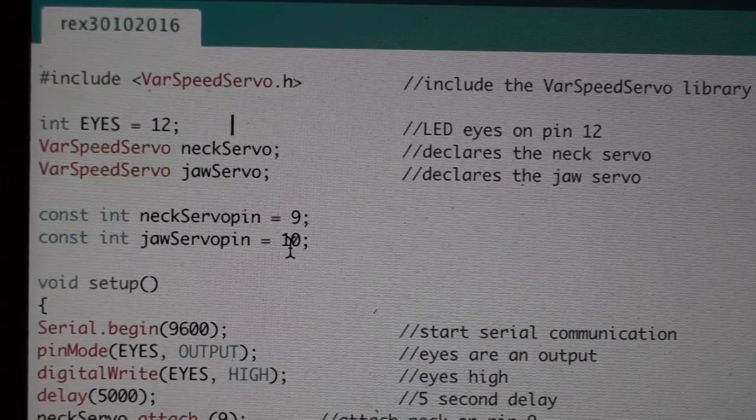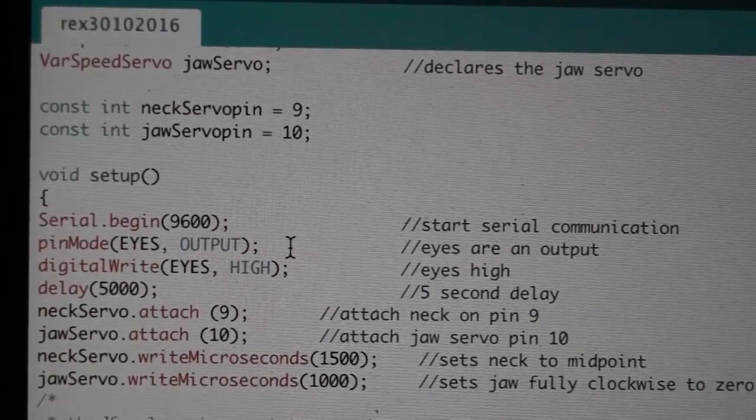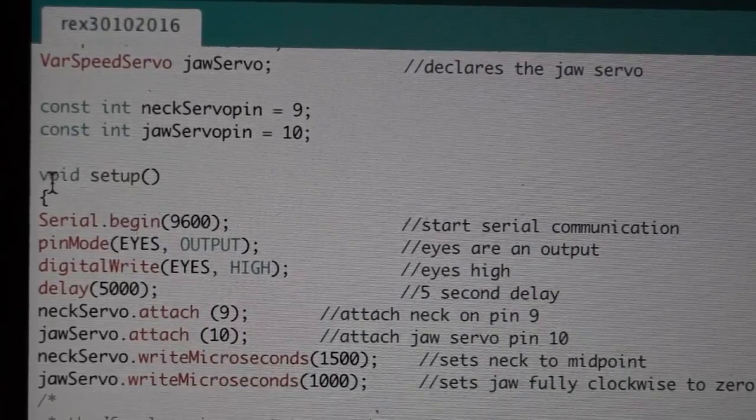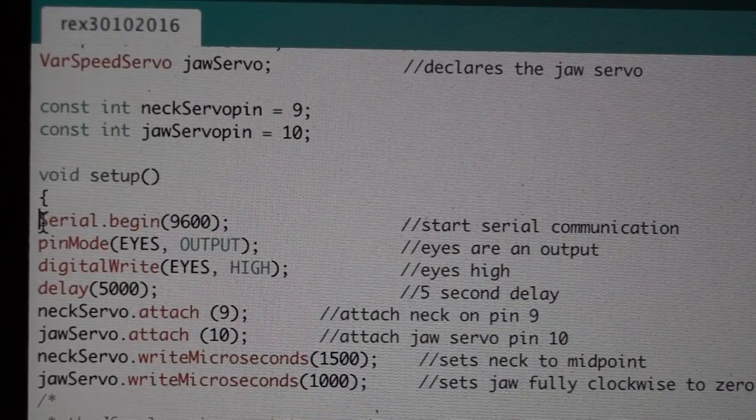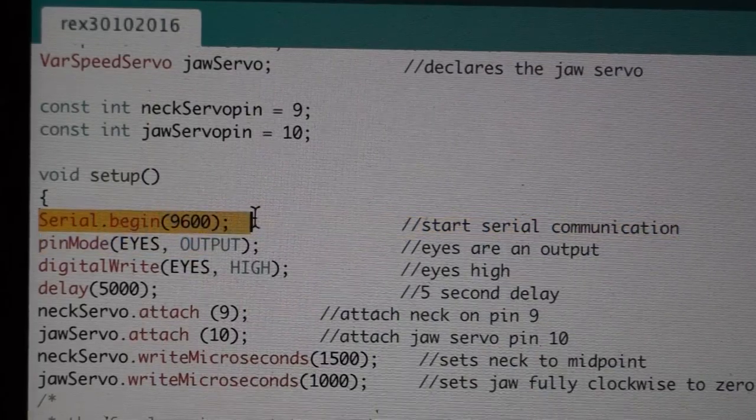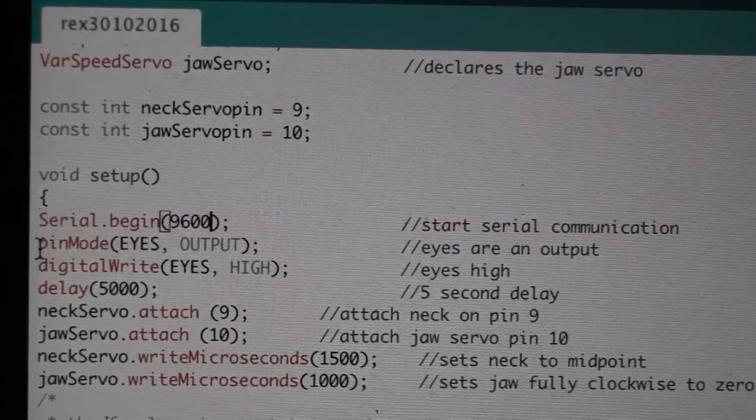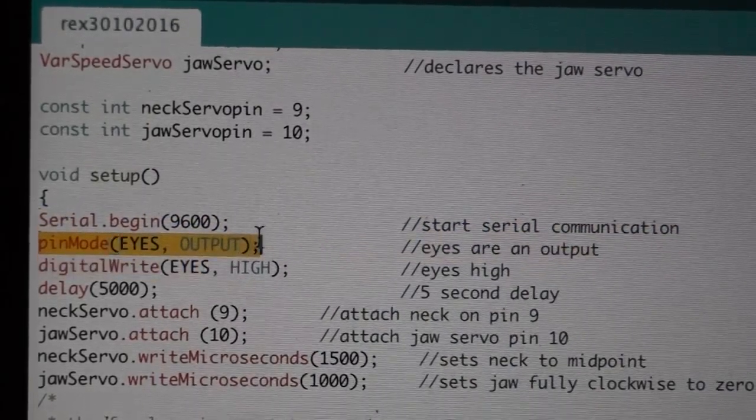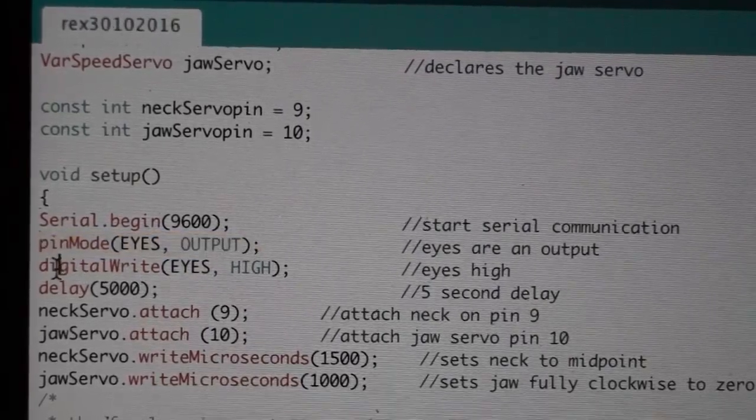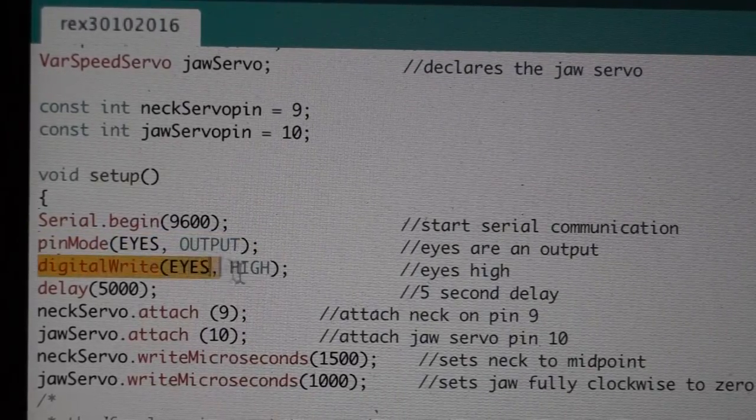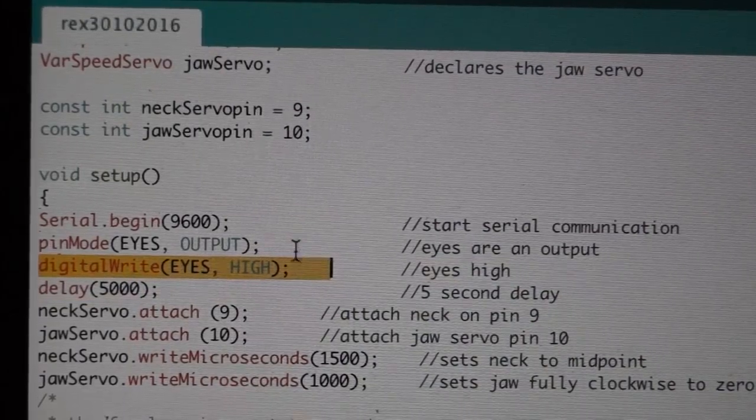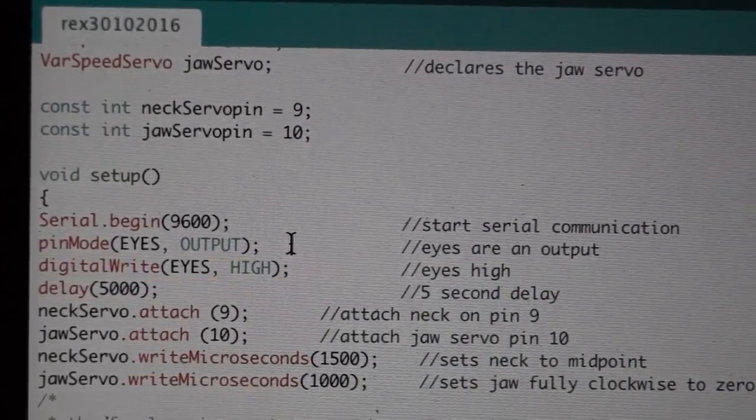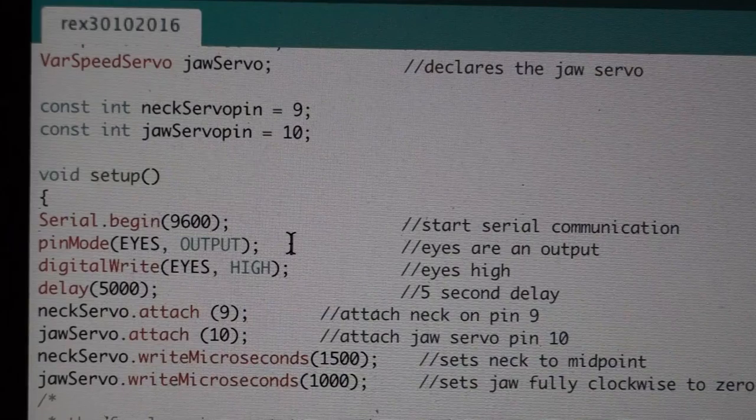Then in my initial sketch elements here we've got the eyes declared as a variable. Those are set up on pin 12. We must declare each of our servos so therefore within the variable speed servo library we're declaring a neck servo and a jaw servo. And then assigning the neck servo and a jaw servo to specific pins.